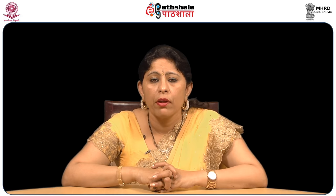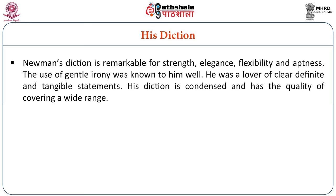As far as the diction of Newman is concerned, his diction is remarkable for its strength, elegance, flexibility, and aptness. The use of gentle irony was known to him very well. He was a lover of clear, definite, and tangible statements. His diction is condensed and his quality of covering a wide range is noteworthy. His thoughts naturally move and explain with clarity the conflicts of his heart. Sometimes he wrote long sentences, but his manner of expression is marvelous. The impact of Wordsworth can be seen clearly on his writings.